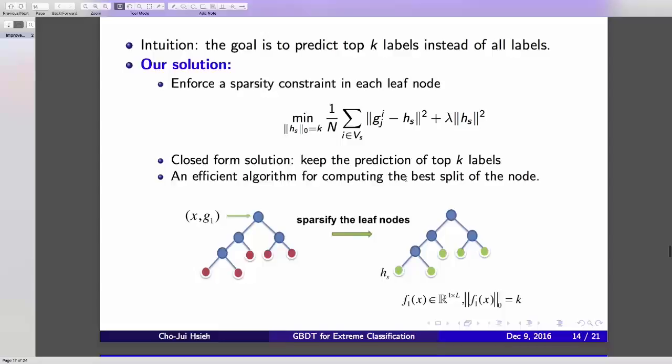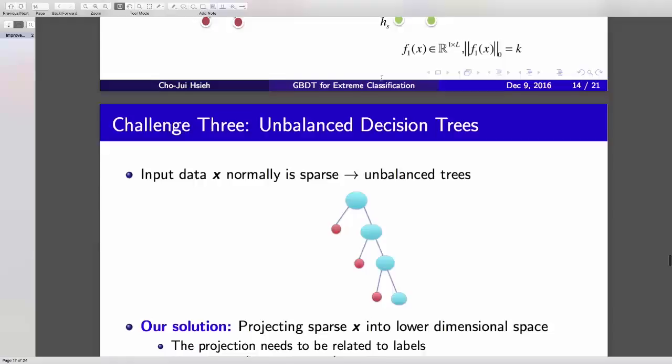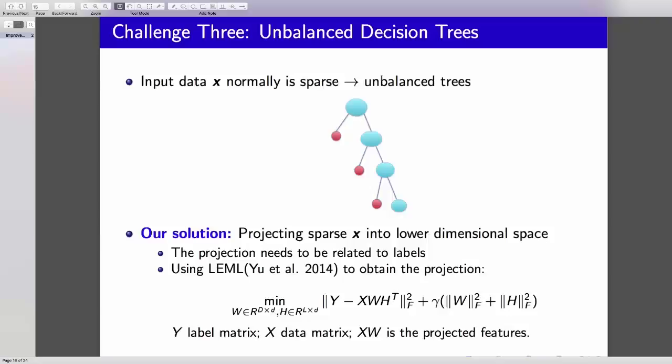Another problem is the unbalanced decision tree because the feature is sparse. Every time when you look at one feature, only a small portion of the samples go to left, and a large portion go to right. To handle this, we first learn embedding for the feature for each data, and then use this low-rank embedding to build a decision tree. It's a two-step algorithm. We use LENL algorithm to learn the feature embedding.